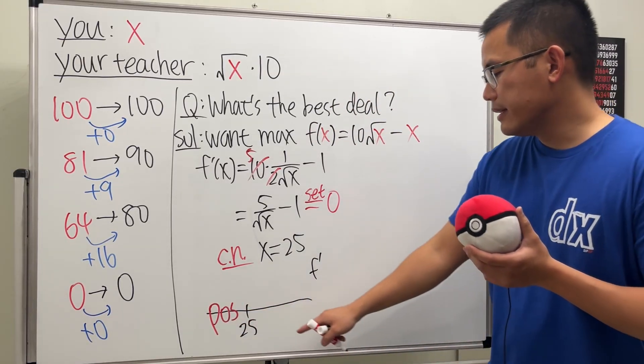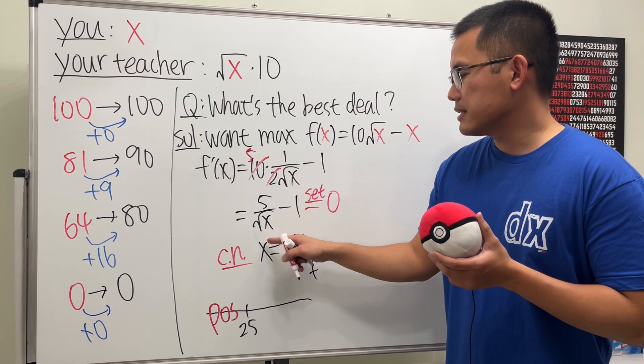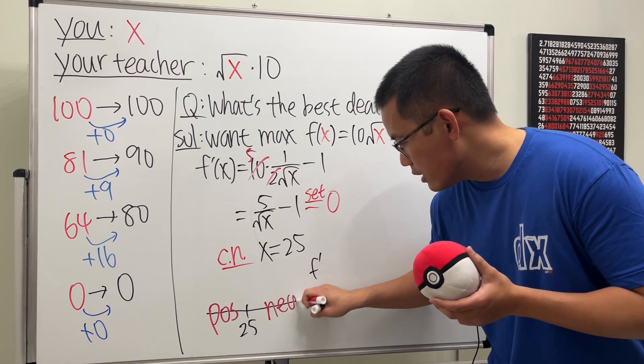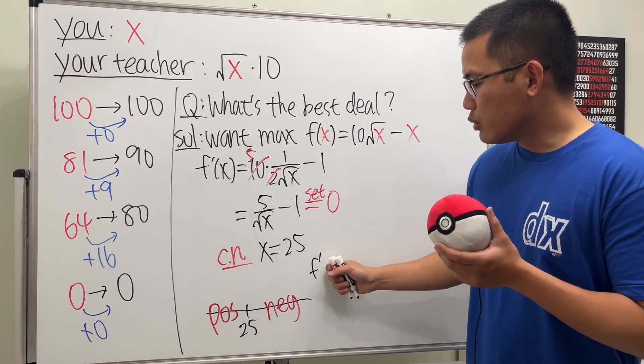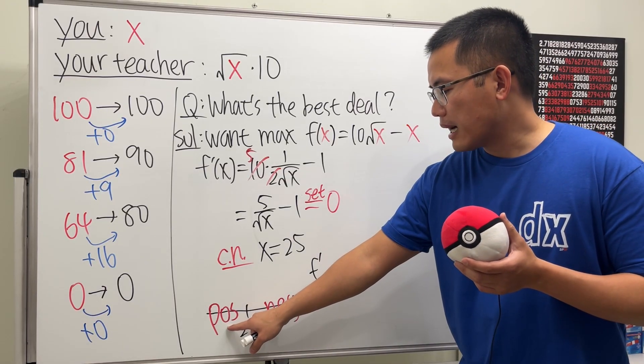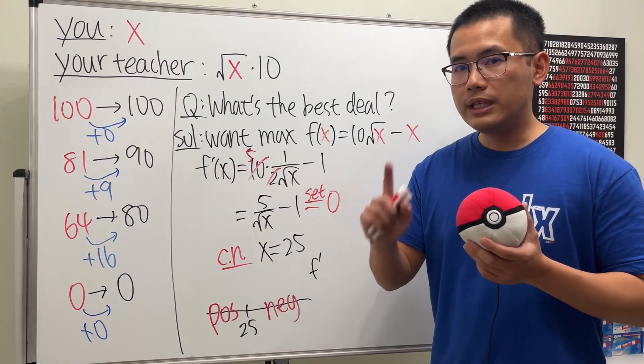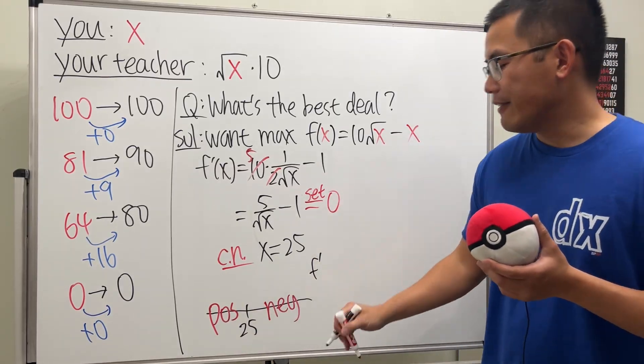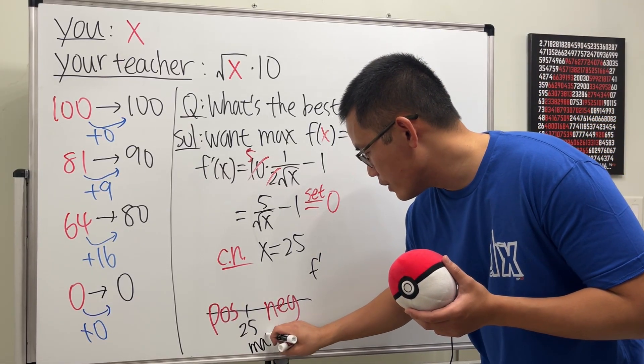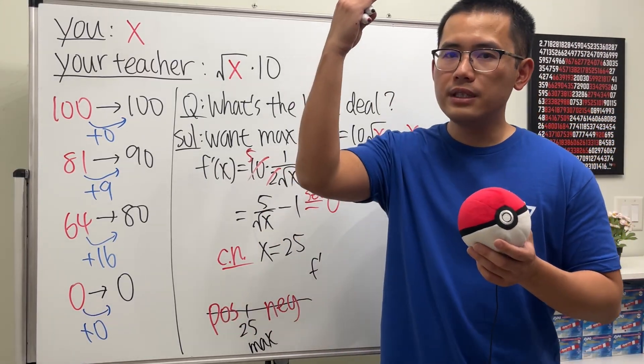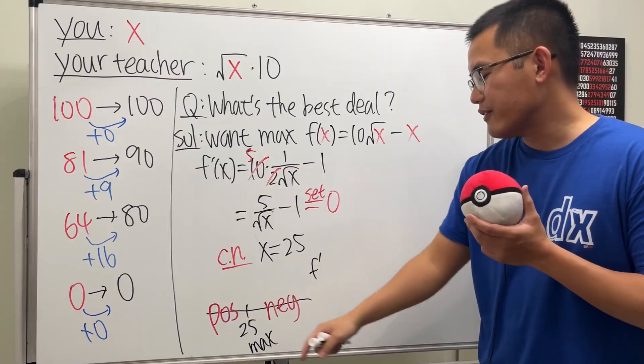And if we pick a number bigger than 25, let's say 36. And you will end up with negative. So as you can see, the derivative changes from positive to negative when x is at 25. So it guarantees that we will have a maximum. And the reason is because this tells us the function goes from increasing to decreasing. That's why we have a maximum.